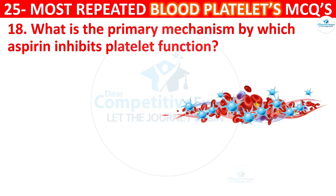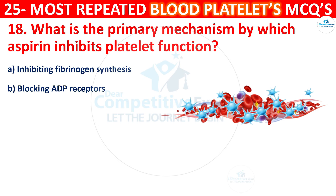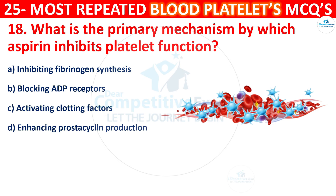Question 18. What is the primary mechanism by which aspirin inhibits platelet function? Your options are: inhibiting fibrinogen synthesis, blocking ADP receptors, activating clotting factors, or enhancing prostacyclin production. The correct answer is B, that is blocking ADP receptors.